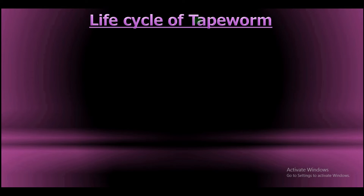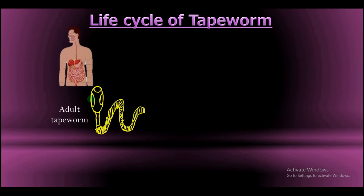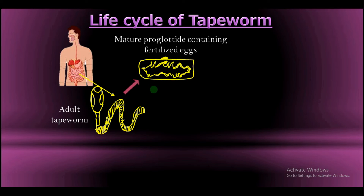The life cycle of tapeworm begins in the intestine of man. When the proglottid containing the fertilized eggs becomes mature, it pulls from the body of the tapeworm and then falls down the small intestine. Because this mature proglottid has fallen down the small intestine and is unattached to the wall of the intestine, it is passed out of the body along with feces into the soil. In the soil, the mature proglottid ruptures to release the eggs.